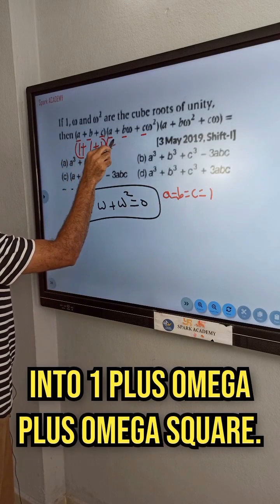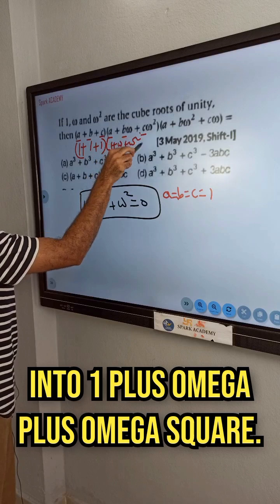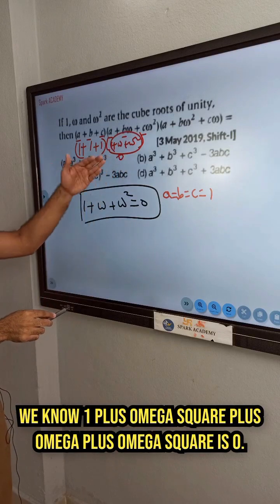We know 1 plus omega square plus omega plus omega square is 0, so question is 0.